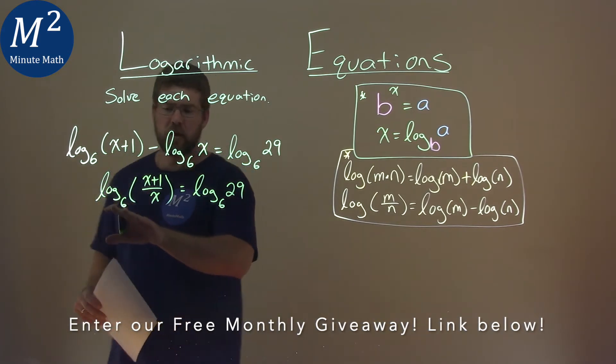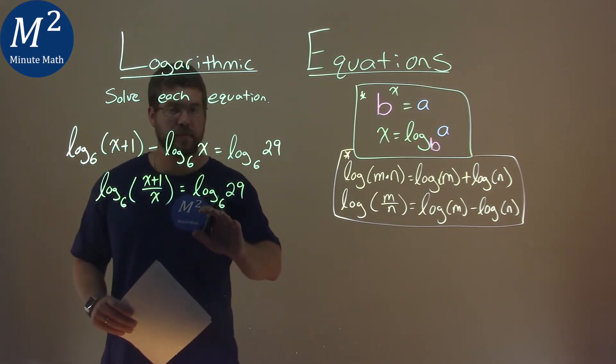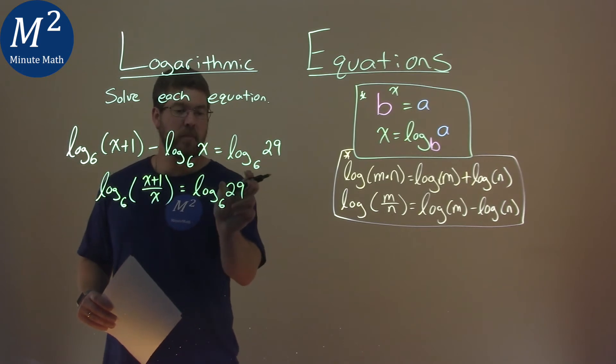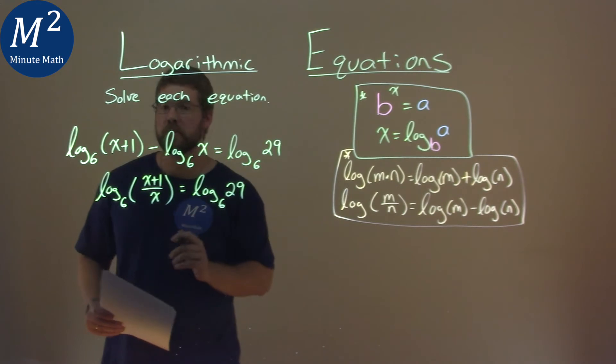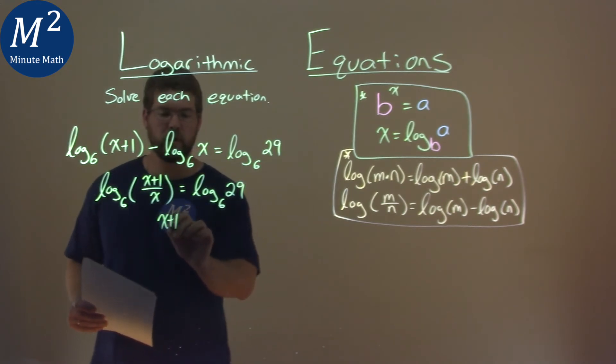Well again, we have log base 6 and log base 6. When that happens, we can take what we're taking the log of, if it's equal and there's nothing else there, and we can set them equal to each other. x plus 1 over x here is equal to 29.